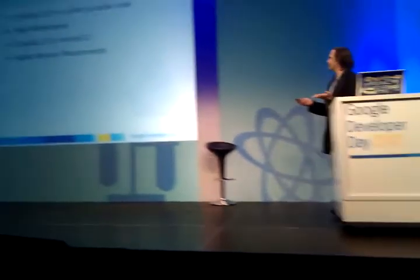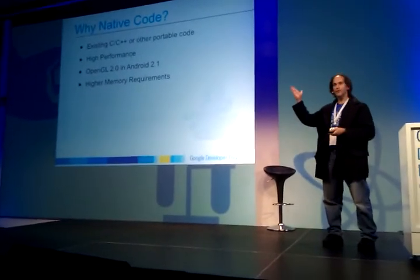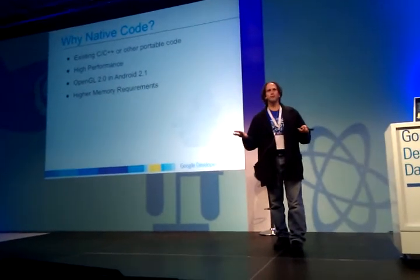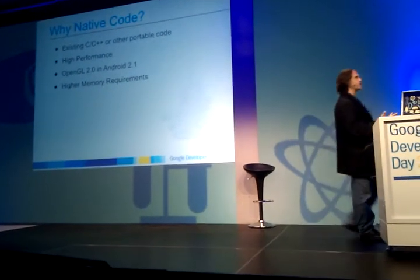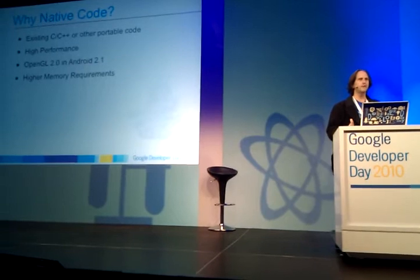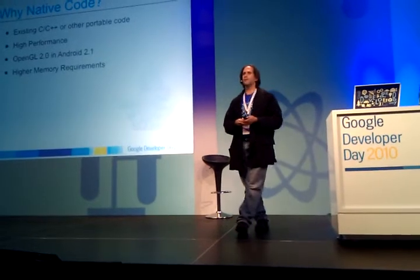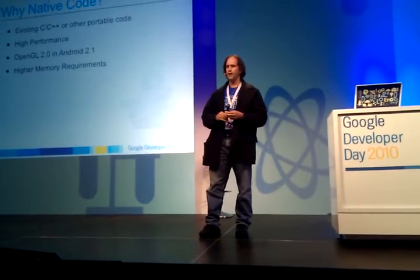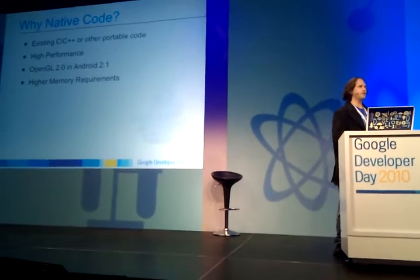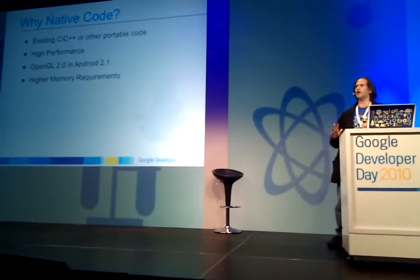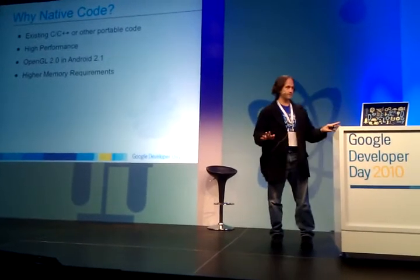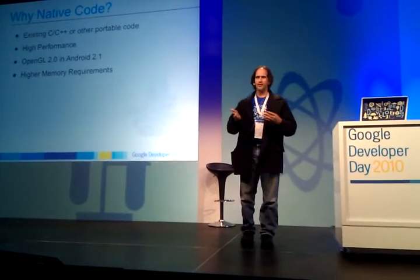So, why use native code? You might have existing C or C++ or other portable code. You want really high performance — physics simulations, mixing of sounds, all sorts of cool stuff that's really hard to do otherwise. You want to do OpenGL ES 2.0. We didn't actually surface a wrapper for that until Froyo. Or you want higher memory requirements, because with the NDK you are not limited by the VM. But this means your application can pretty much cause everything else on the phone to shut down, so with great power comes great responsibility.